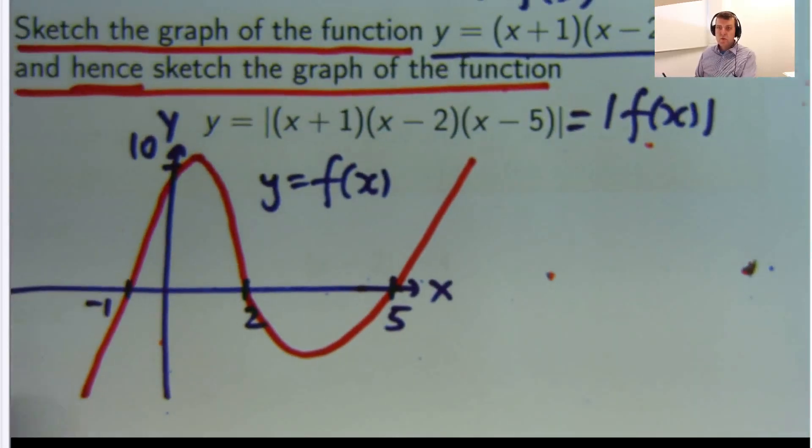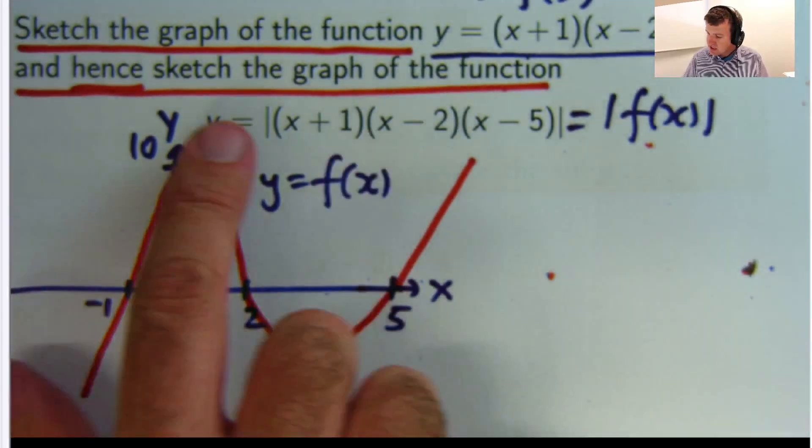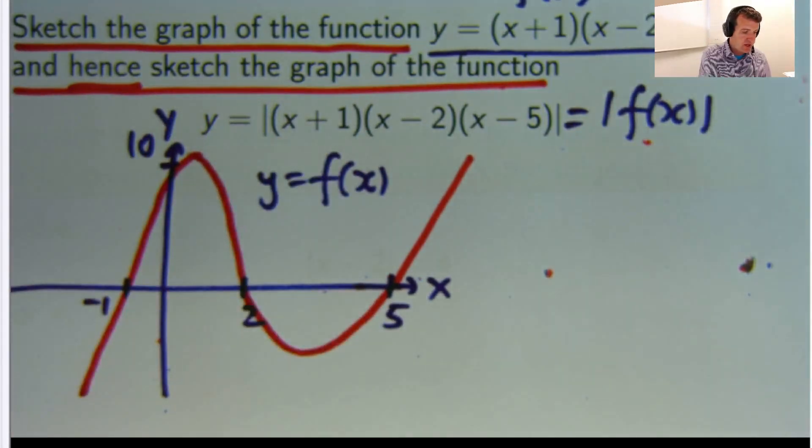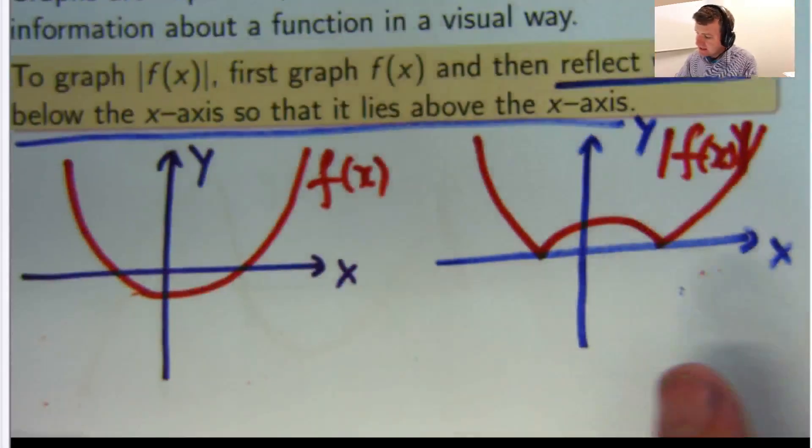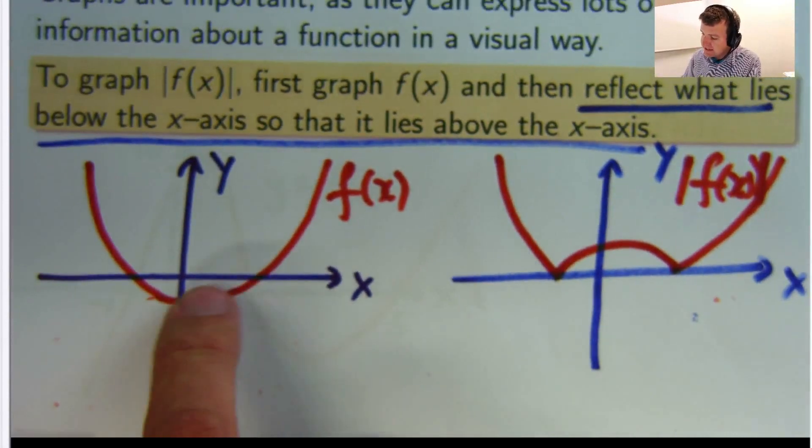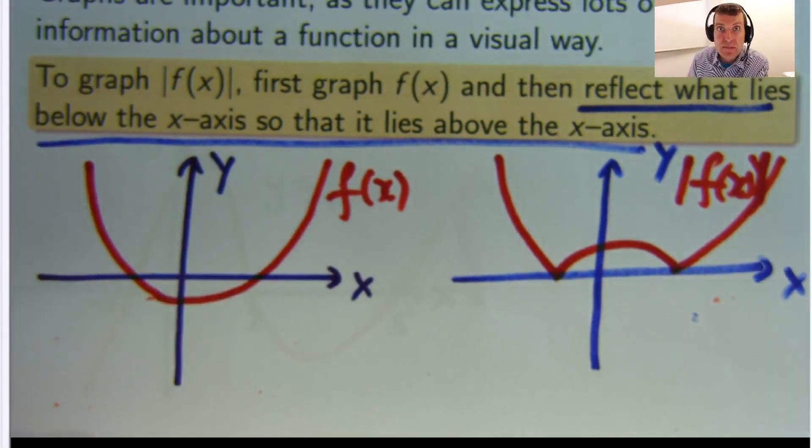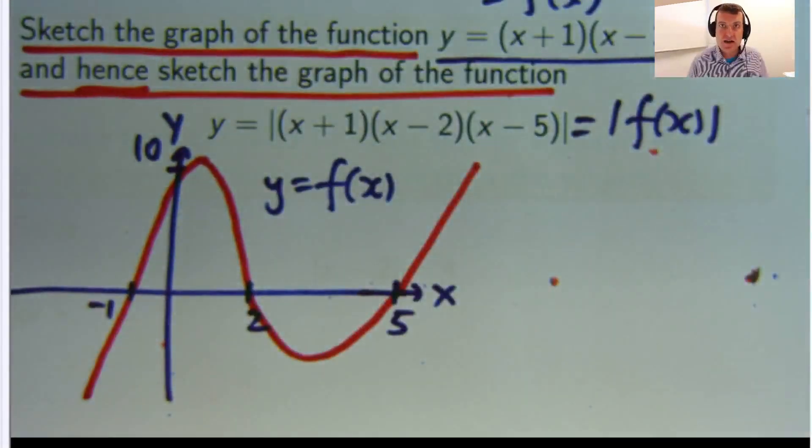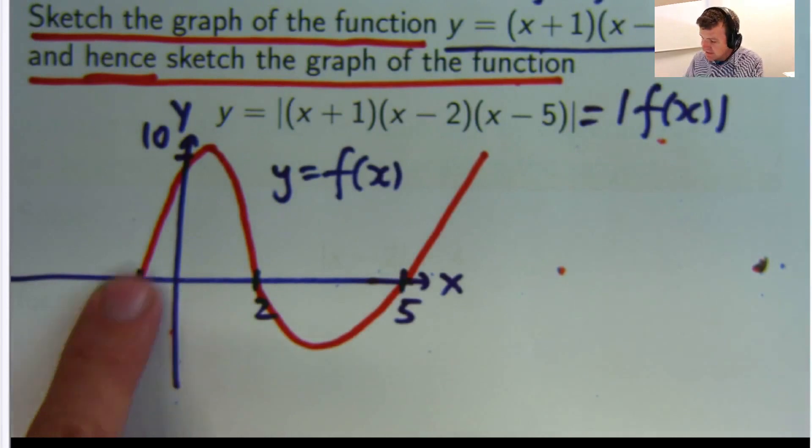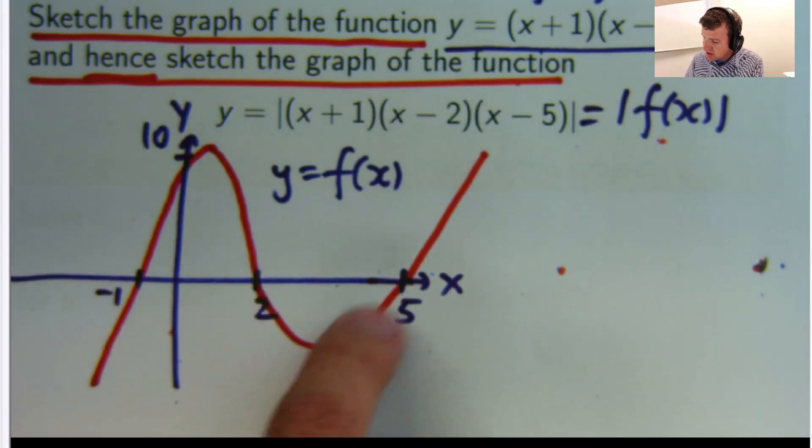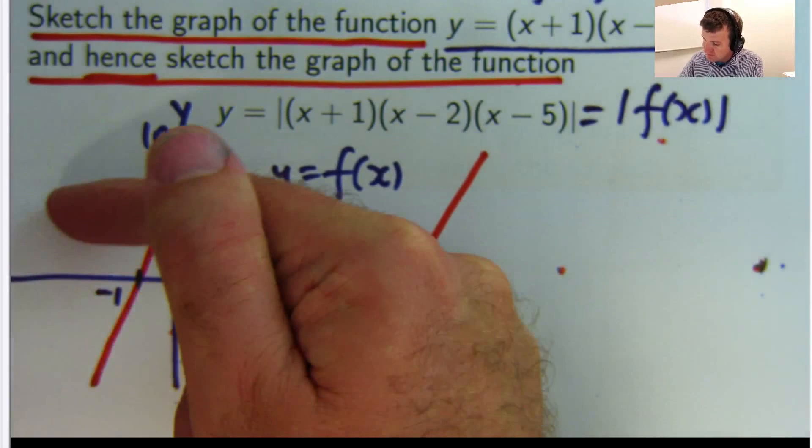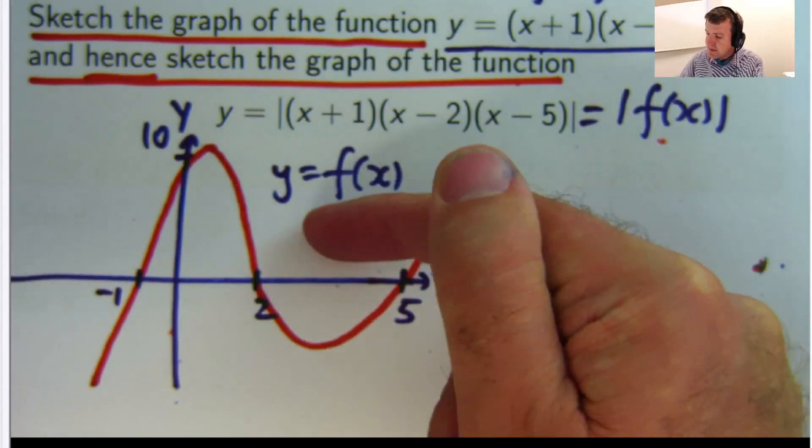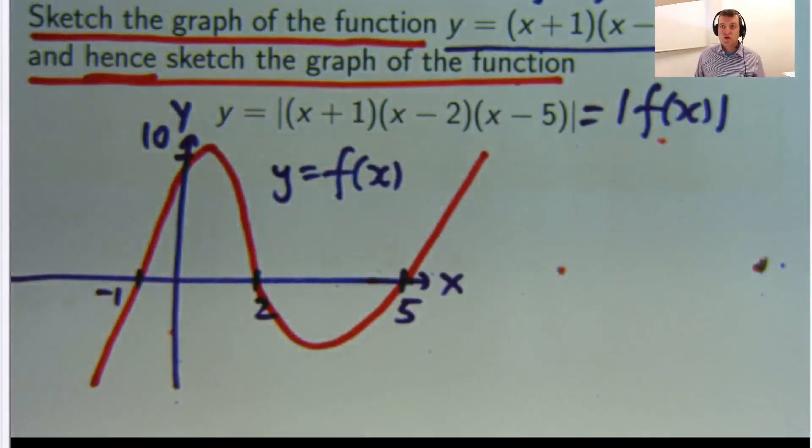Okay? So what we do to sketch the graph of the absolute function is basically you just reflect everything that lies below the x axis so that it lies above the x axis. Okay? Because absolute value cannot be negative. So if you look here, this bit's below the horizontal x axis. This bit's below the horizontal x axis. So that'll have to come up here and that'll have to come up here. And the rest of the graph will stay the same.